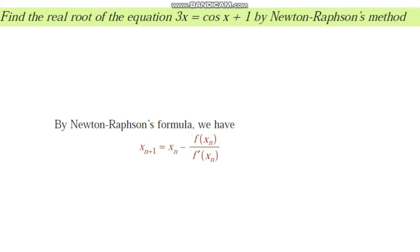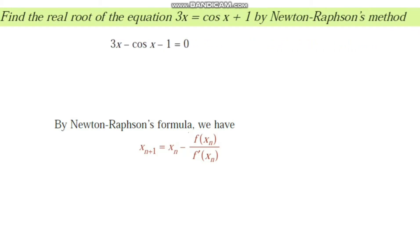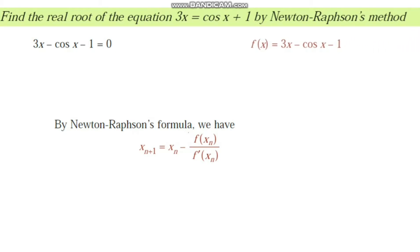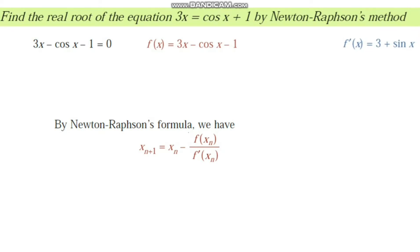The given equation can be written as 3x minus cos(x) minus 1 equals 0, compared with f(x) = 0. We identify f(x) = 3x minus cos(x) minus 1. The derivative f'(x) is obtained as: the derivative of 3x is 3, the derivative of negative cos(x) is negative sin(x), and the constant term gives 0, so f'(x) = 3 + sin(x).